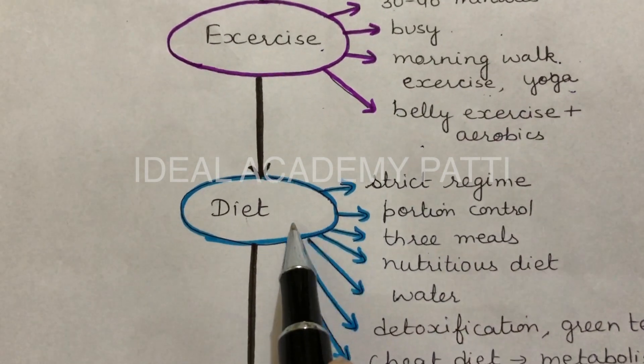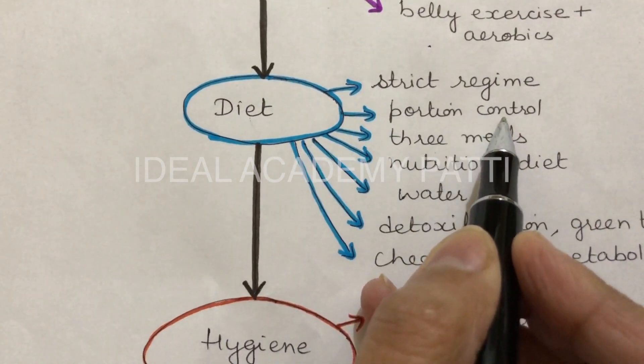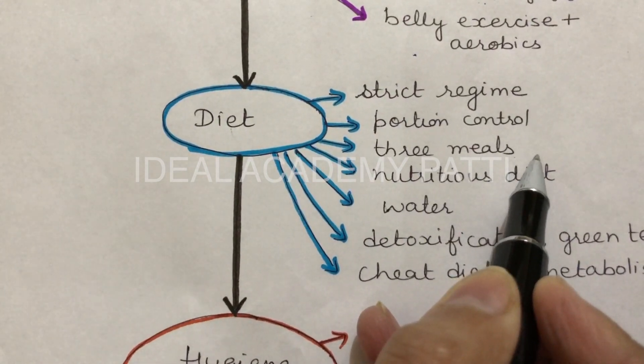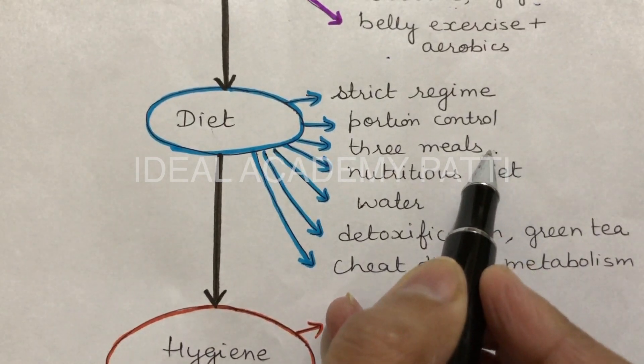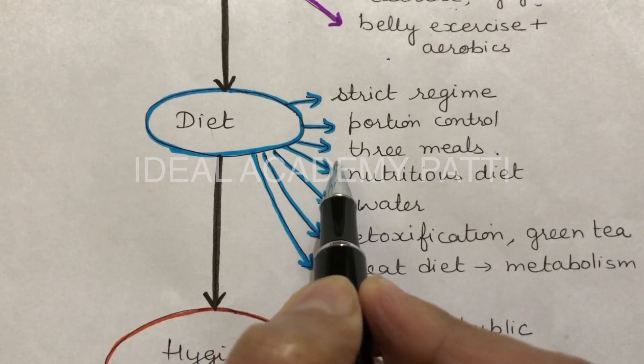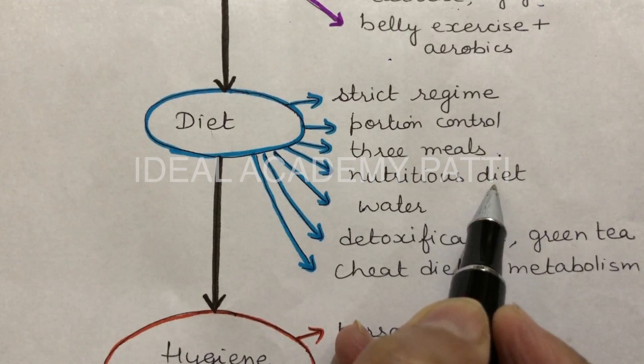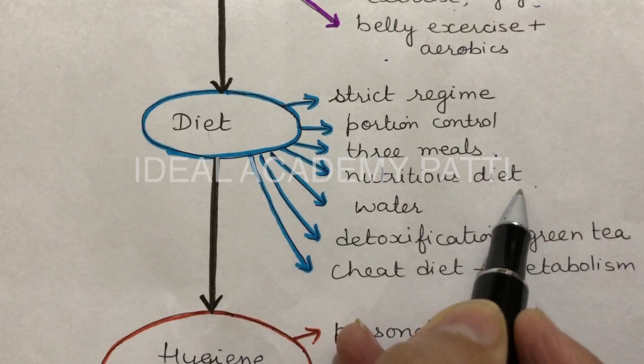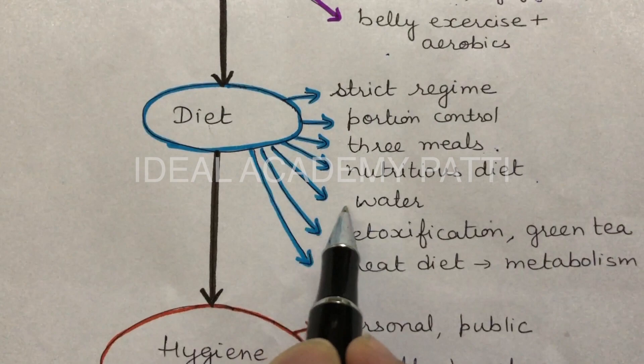I always follow strict diet regime. I believe in portion control. I usually take three regular meals in a day: breakfast, lunch, and dinner. And in between the main meals I prefer to have some healthy snacks like fruits, vegetables, and nuts. I avoid taking restaurant food, fast food, and junk food, but I prefer to have nutritious diet which provides me all the essential components like vitamins, proteins, carbohydrates, and minerals in appropriate amount.